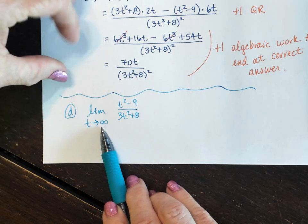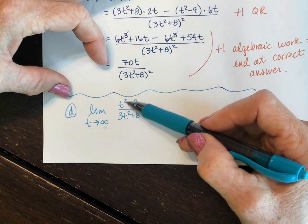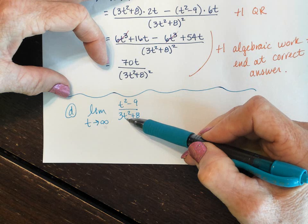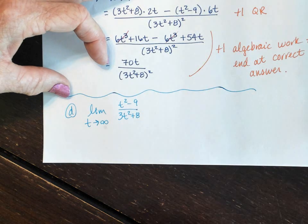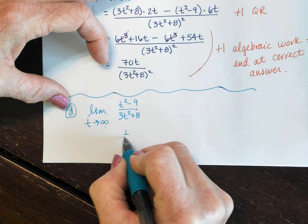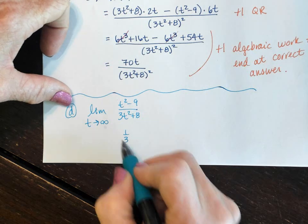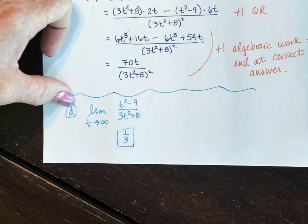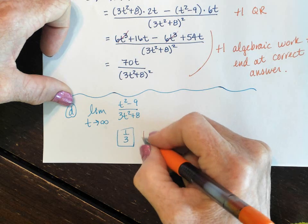This is doing our limits as we approach infinity, so we compare degree in the numerator, degree in the denominator. They're the same, so your limit is the fraction of the leading coefficients, or one-third. And that's it. And it was one point for the answer.